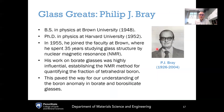Our glass great for today is Philip Bray. Phil Bray was one of the pioneers of glass structure using NMR — nuclear magnetic resonance. Born in 1926, he got his bachelor's in physics at Brown University in 1948 and his PhD in physics at Harvard in 1952. He joined the Brown faculty in 1955, spending his 35-year career there focused on glass structure using NMR. His work on borate glasses was very influential, establishing the NMR method for quantifying the fraction of tetrahedral boron and really paving the way for our understanding of the boron anomaly.